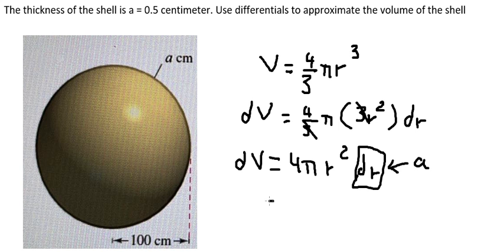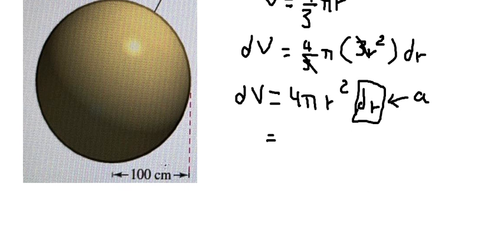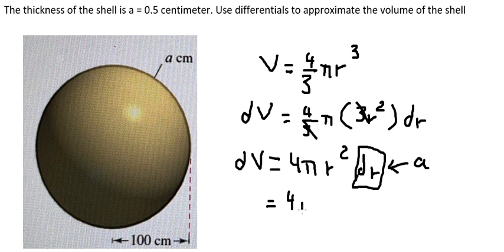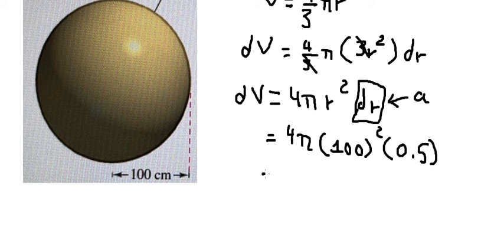So we have the radius in here. So we calculate this one and we have 20,000 pi. This is the end.